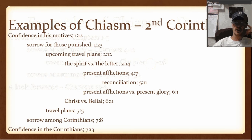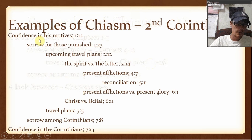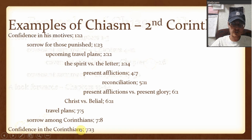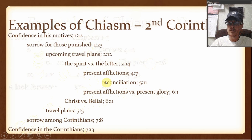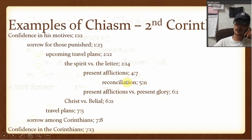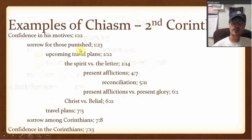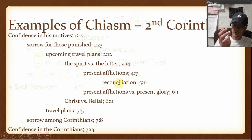Here's a third example of chiasm. The first seven chapters of 2 Corinthians are a chiasm. Paul has confidence in his motives starting in chapter 1, verse 12. Down in chapter 7, verse 13, it's confidence in the Corinthians. Chapter 1, verse 23 addresses sorrow for those punished, mirrored by sorrow among Corinthians. Upcoming travel plans mirror travel plans. The spirit versus the letter mirrors Christ versus Belial. Present afflictions mirror present afflictions versus present glory. The center is reconciliation. The moral of all this is that the whole reason for Paul's ministry is for the purpose of reconciliation — for the purpose of restoring people. I've read through 2 Corinthians so many times and always thought it was crazy, but as this shows, there was a method to what he was saying. It was chiasm.